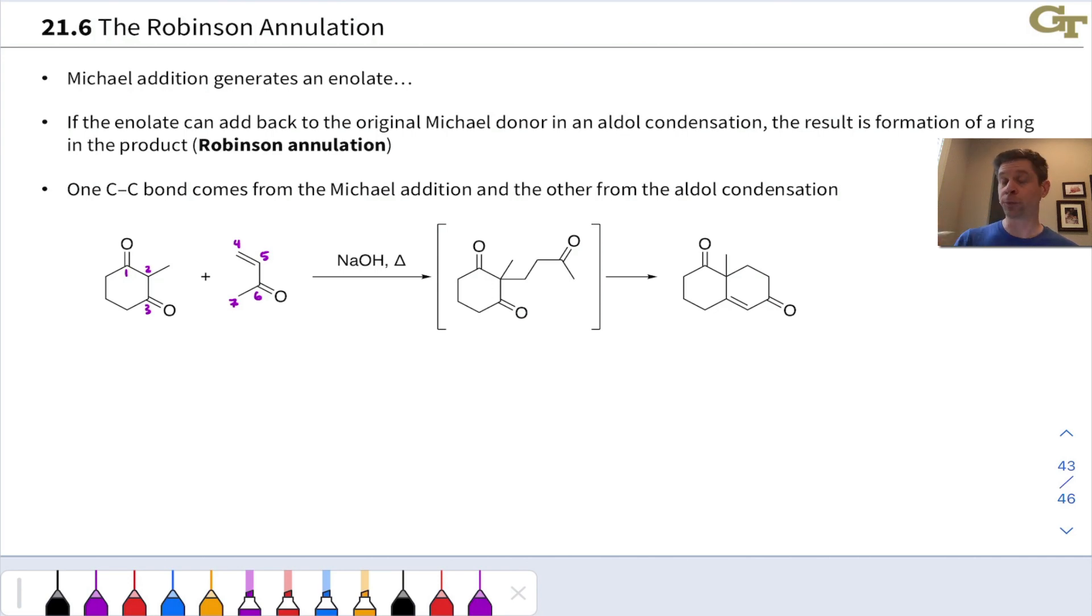So the net result is a four plus two cycloaddition, but a stepwise cycloaddition where one bond is formed through Michael addition and the second bond, really bonds because we're going to see a double bond forms, are formed through aldol condensation. Let's dig into this.